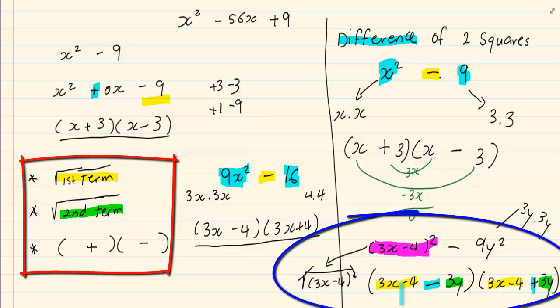You will notice that 3x minus 4 even though it is 2 terms, it is the root of the first term in the question.